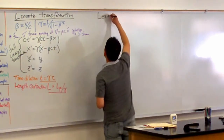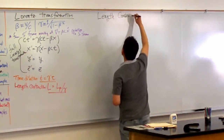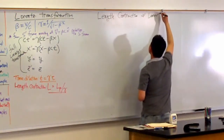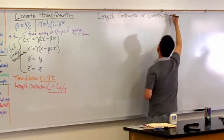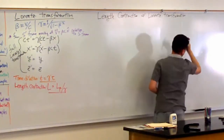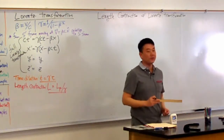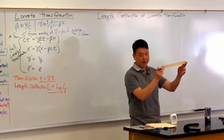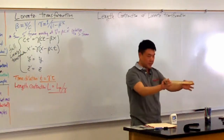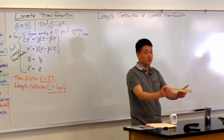So, length contraction with the Lorentz transformation. I figured out what I did wrong last time — I was having the ruler move, because that was the setup I had. But for the particular kind of mistake I want to illustrate, I actually have to have the ruler stay stationary. So the ruler is stationary; what is actually moving is not the ruler, but you.